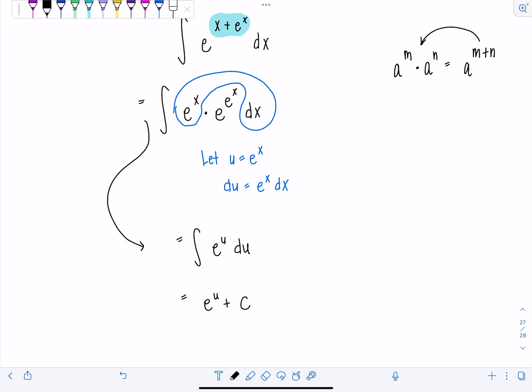Integral of e to the u is just e to the u plus c. And then go back, replace u with what it originally was, e to the x. So this is e to the e to the x plus c.